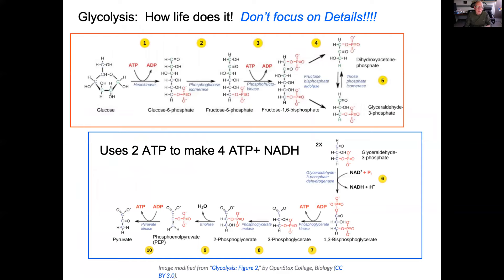In glycolysis, you start with glucose, consume ATP, and convert it stepwise, ultimately splitting it into two molecules. These two molecules can make two moles of NADH, then one mole of ATP at step seven and another mole at step ten, leading to pyruvate. You have a net gain of ATP even though you start out consuming it.